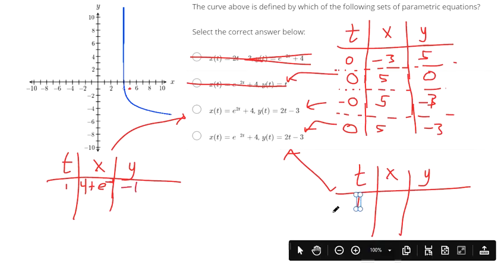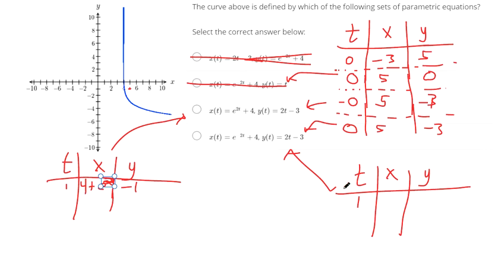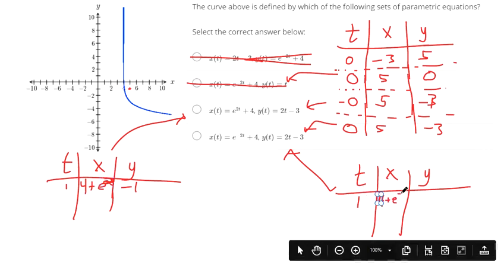And over here, if you plug in 1 in for t, x is going to be, oh sorry, this one is positive 2. This is 4 plus e to the negative second. And then y is also going to be negative 1. So these are close. The only difference is the x coordinate.